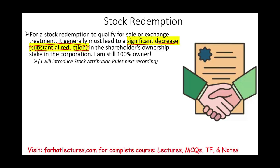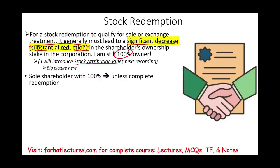We're going to learn later, in another session, there's something called stock attribution rules. Sometimes you might sell your shares, but you are still an owner of the company. You may be out altogether, but indirectly you could still be an owner. As a sole shareholder, you only have a sale if you have a complete redemption — you're getting out. And sometimes, even when you get out, through stock attribution rules, you might still be an owner.